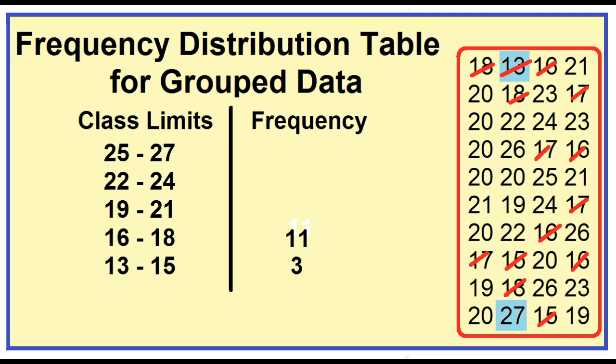How about 19 to 21? 20, 20, 20, 20, 20, 21, 21, 21, 19, 20, 20, 20, 21, 19 — the frequency for the class 19 to 21 is 14.